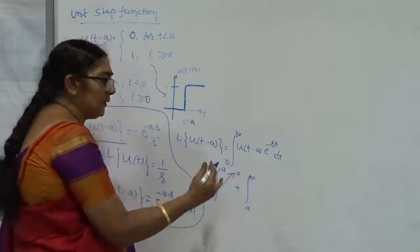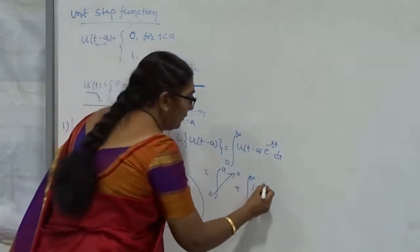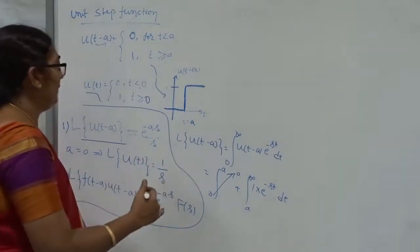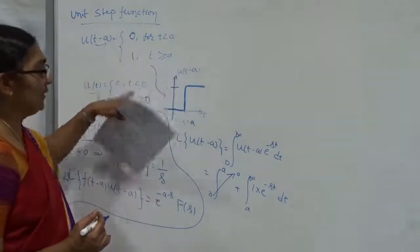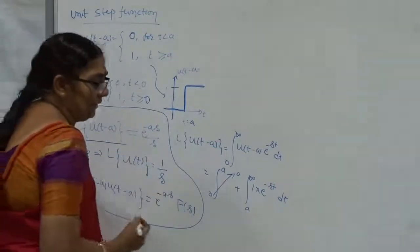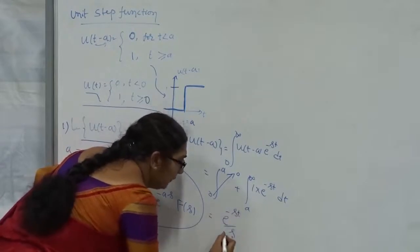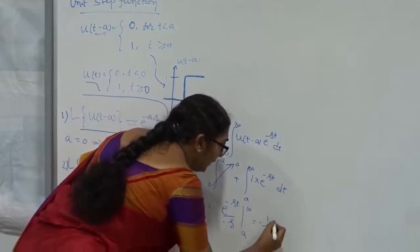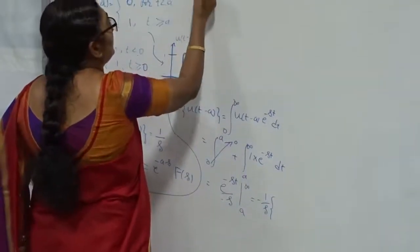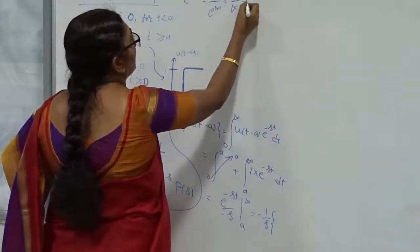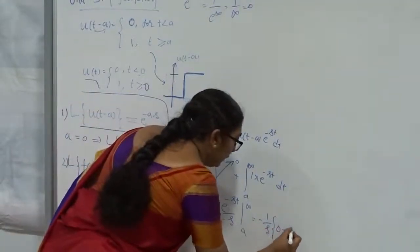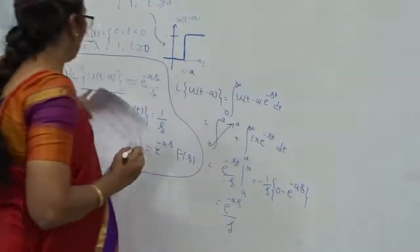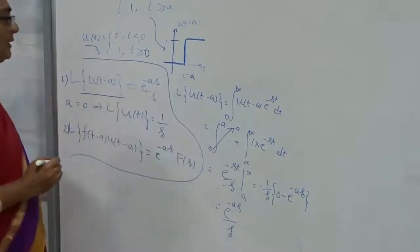For A to infinity, where T is greater than A, the value is 1 into e to the power of minus ST, DT. Simplifying, the integration of e to the power of minus ST gives e to the power of minus ST divided by minus S, evaluated from A to infinity. The upper limit gives e to the power of minus infinity, which equals 1 over e to the power of infinity, which is 0. So we get 0 minus e to the power of minus AS, divided by minus S, which simplifies to e to the power of minus AS divided by S.